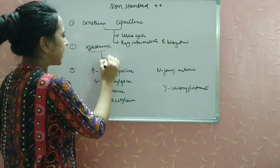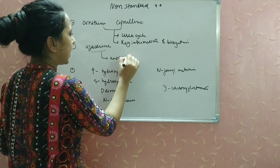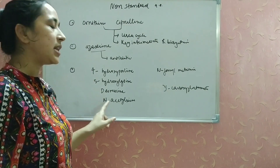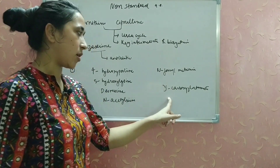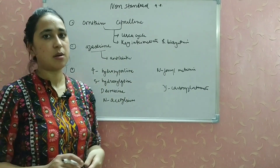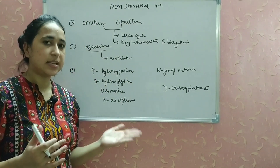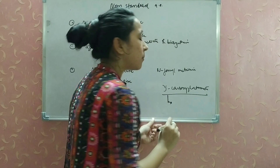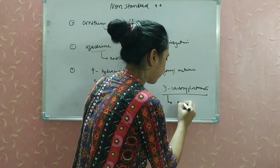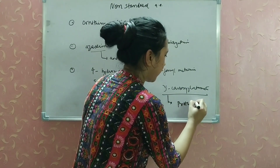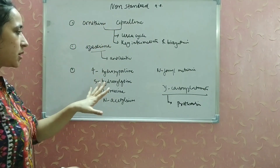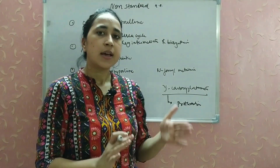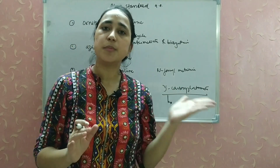Several non-standard amino acids — namely 4-hydroxyproline, 5-hydroxylysine, desmosine, N-acetylserine, formylmethionine, and gamma-carboxyglutamate — are formed after post-translational modifications of standard amino acids. Gamma-carboxyglutamate is found in the blood clotting protein prothrombin. It was originally thought that all non-conventional amino acids arose only through post-translational modification.